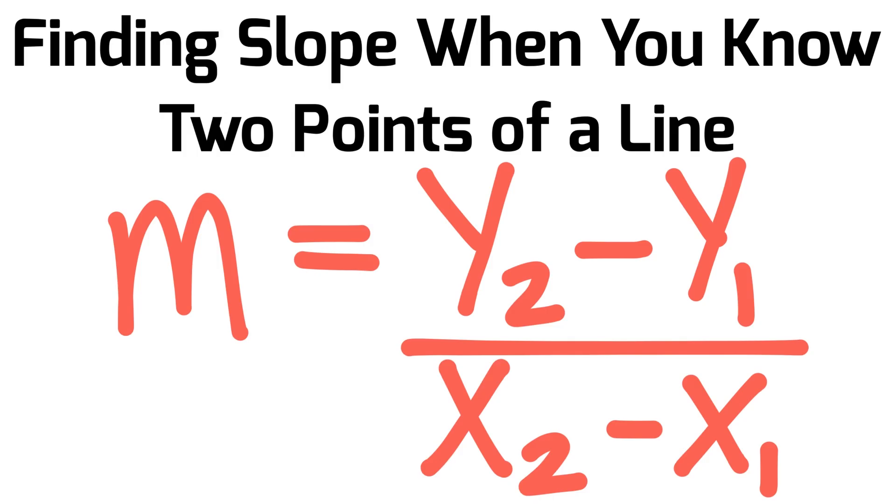This video will teach you how to find the slope when you know two points of a line. In a previous video I showed you the formula m equals the rise divided by the run.